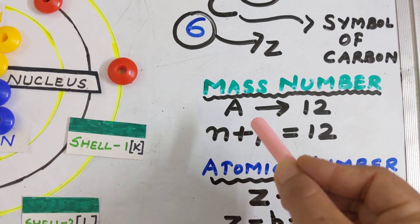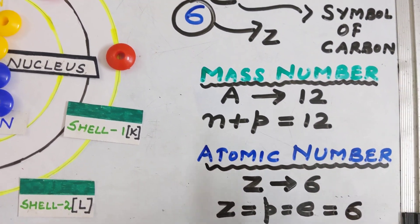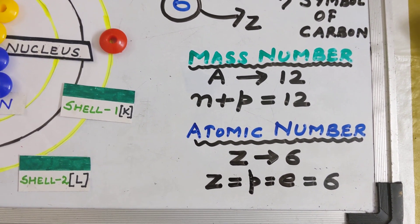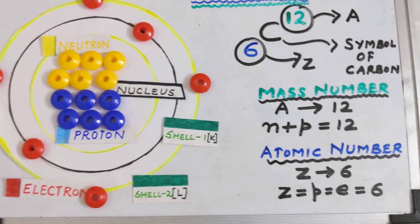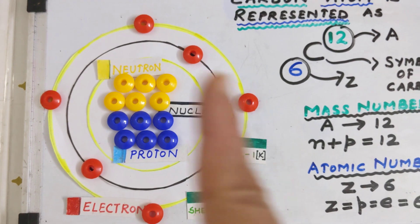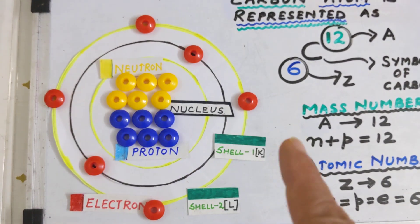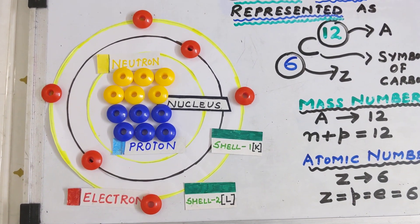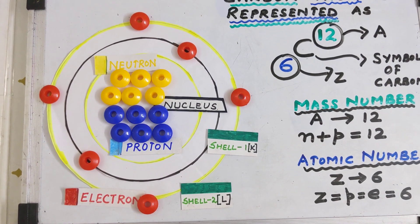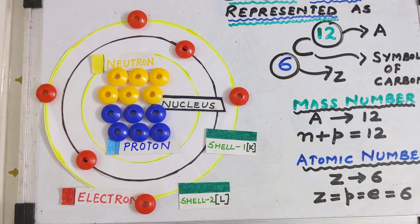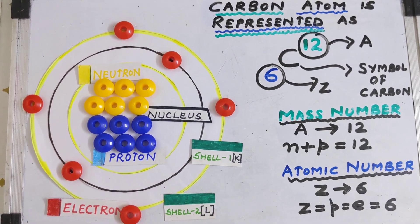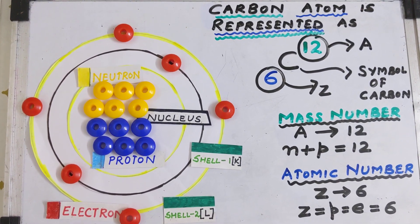The mass number A for carbon is 12, meaning the total number of neutrons and protons is 12. The atomic number Z for carbon is 6, meaning both the number of protons and electrons are 6. In the structure, inside the nucleus we have 6 neutrons and 6 protons, and around the nucleus we have 2 electrons in the first shell and 4 electrons in the second shell. Total mass inside the nucleus is 6 + 6 = 12, confirming the mass number is 12 and the atomic number is 6.